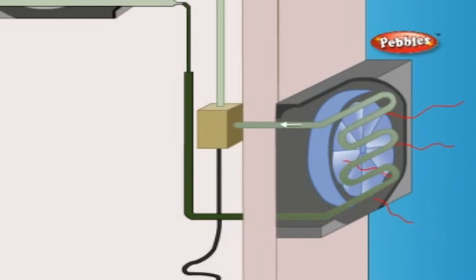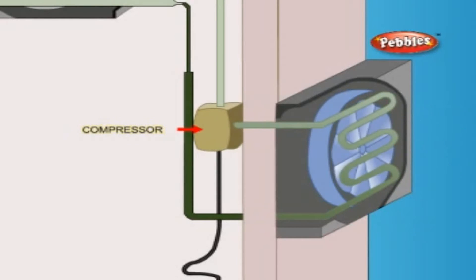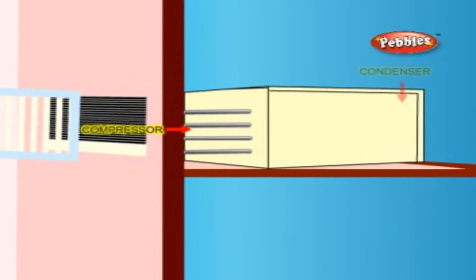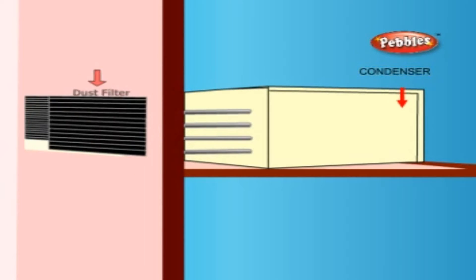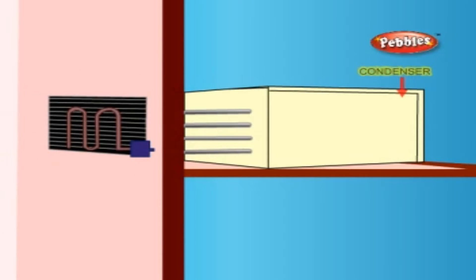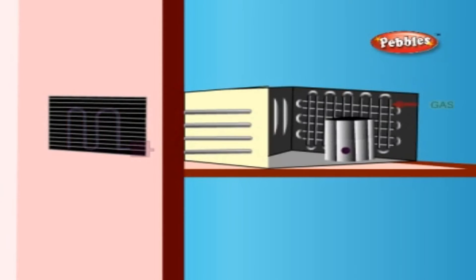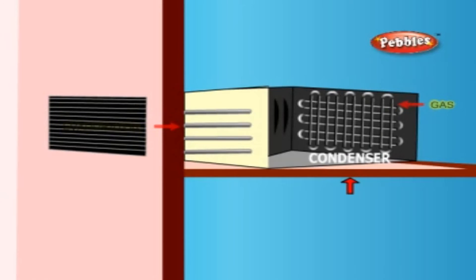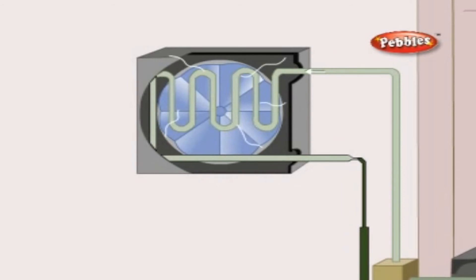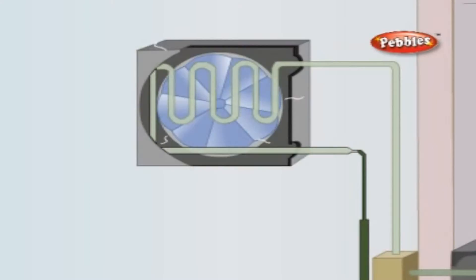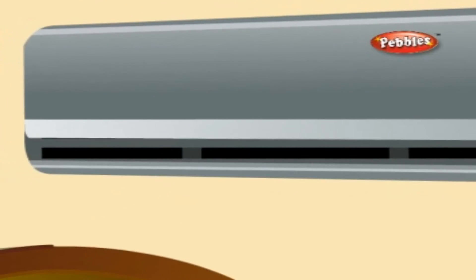A fan blows hot, humid air over an evaporator. Inside the evaporator is a liquid refrigerant that vaporizes; as it does so, it takes heat from the air and condenses the air moisture into drops. The cool, dry air then returns to the room.